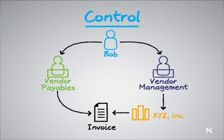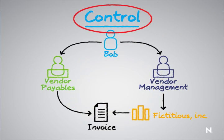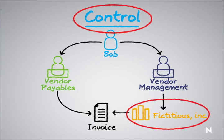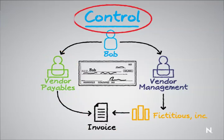And on the surface, it doesn't look like that big of a deal, except that if we consider that Bob now has the ability to create fictitious companies — such as Fictitious, Inc. — he now also has the ability to come out and submit the payments. So the problem here is that he has too much power. He can circumvent those controls, go around them, and would now be able to create the company, the invoices, and the vendor payables, and pay himself money to this fictitious company.